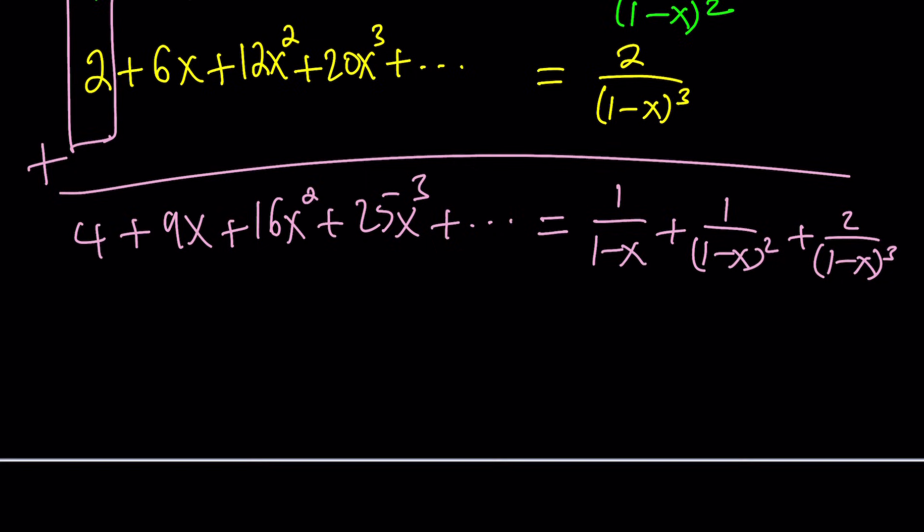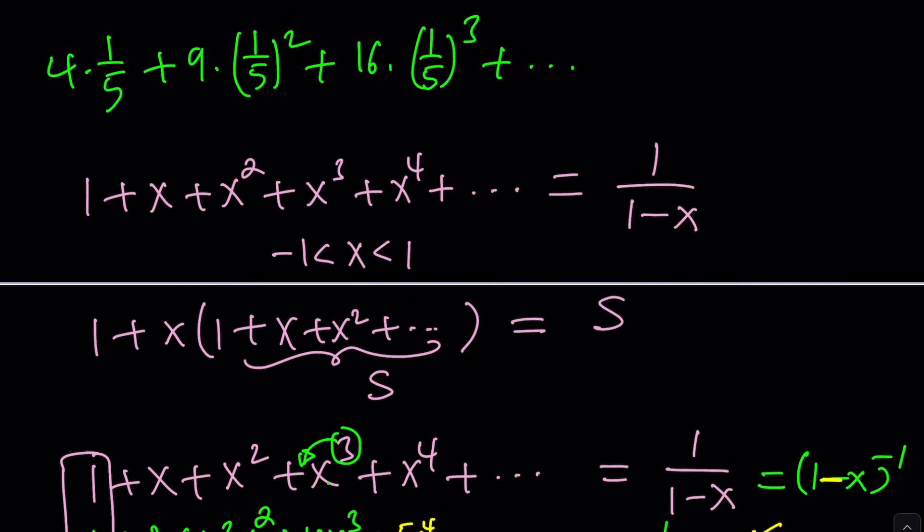We're going to replace x with 1 over 5. Why? Because it's between negative 1 and 1. So our series still converges. Not converge. Converges. So we can go ahead and do that. And if we plug in x everywhere, we're going to get 4 plus 9 times 1 over 5, which is 9 over 5. And then 16 over 25. And then 25 over... Wait. I think I messed up somewhere. Did I? Well, it should be... Hold on a sec. Let me go back and check this. Oh, 16 over 125. Oh, okay.